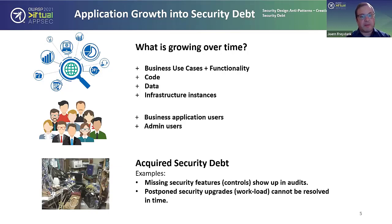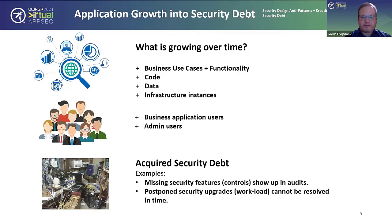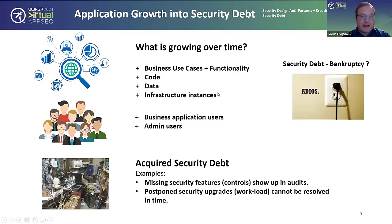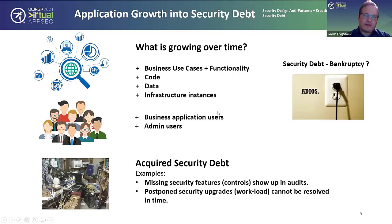We're also adding security features as a workload item that we need to implement to make the application secure. If you don't have that, it will show up in certain areas — for instance, missing security features show up in audits, or we postpone security upgrades as a workload item that cannot be resolved in time anymore because it just breaks too many things at once. This leads to the bigger question: what is the equivalent of a bankruptcy case for our security debt?